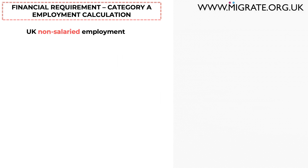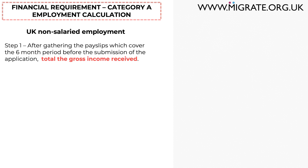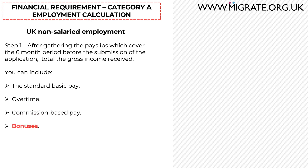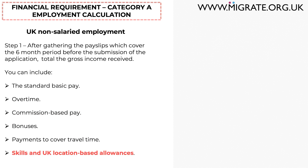Let's now discuss how to calculate non-salaried employment income where the sponsor is based inside the UK when the online application is submitted under category A. Step 1: after gathering the pay slips covering the six months before the submission of the application, total the gross amount received. Here you can include the standard basic pay — for example, the £15 per hour — overtime, commission-based pay, bonuses, payments to cover travel time, and skills and UK location-based allowances.